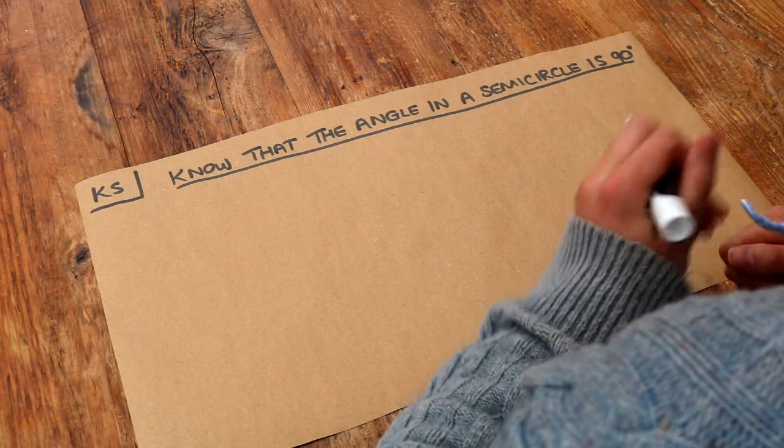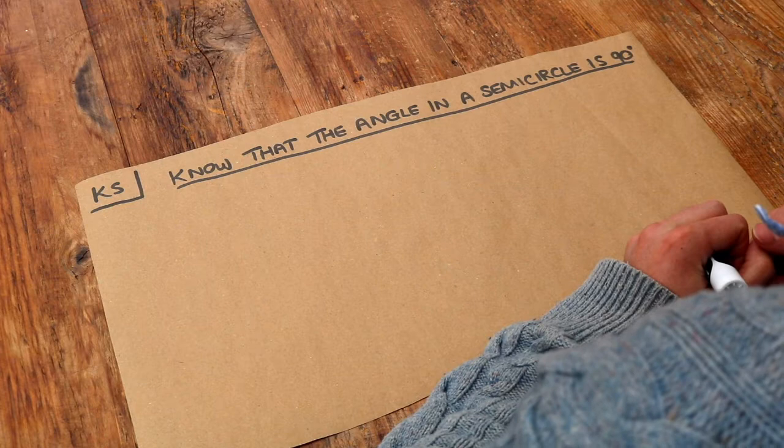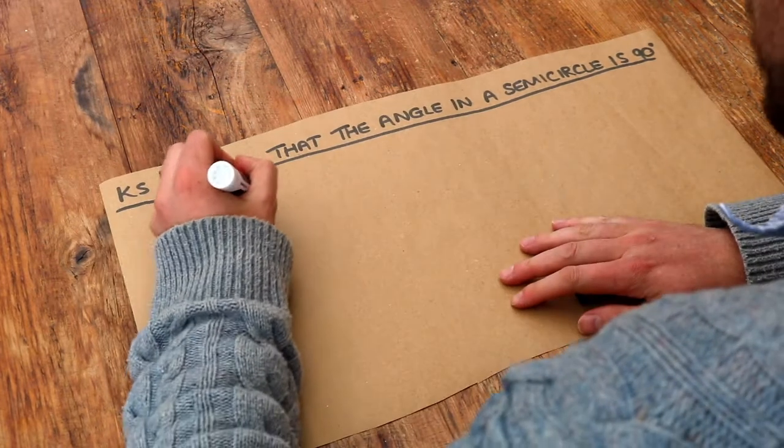So this is an example of a circle theorem. Circle theorems are just angle laws to do with circles and it's just this.